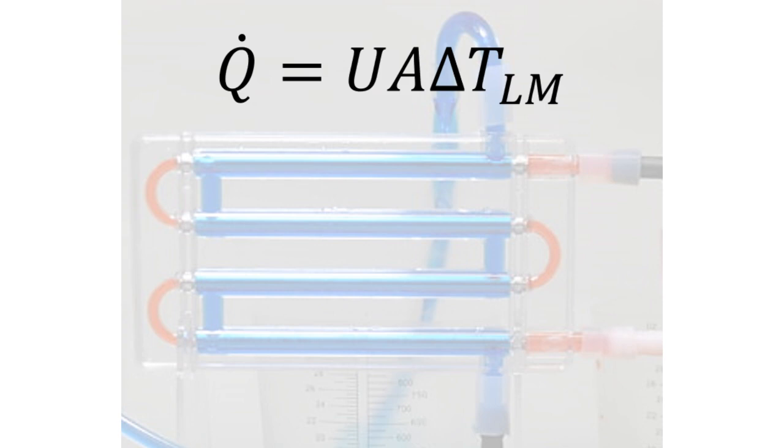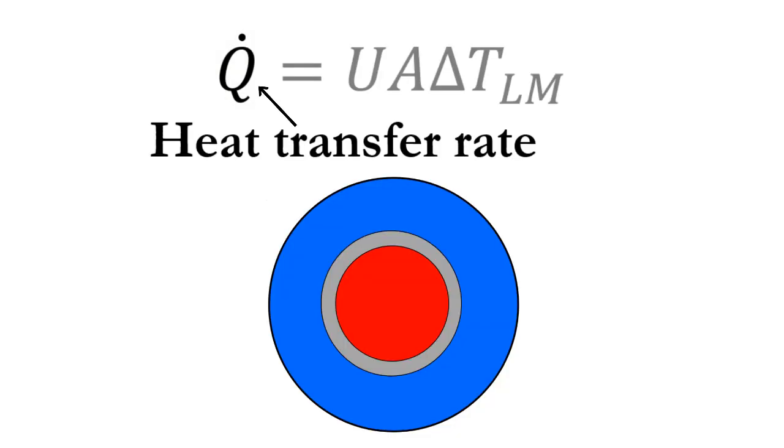Let's go over what each of these terms mean. Q is the rate of heat transfer from the hot to the cold fluid. It has SI units of watts, or joules per second.